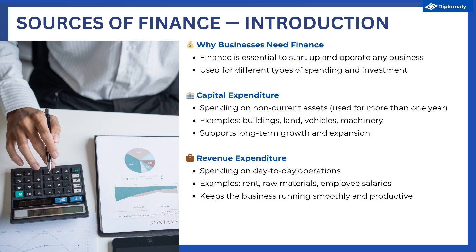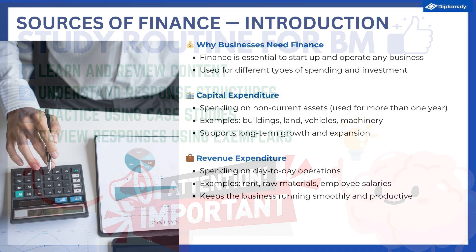We'll learn more about non-current assets in Unit 3.4 when you look at the various final accounts. The other type of spending is revenue expenditure, which refers to the spending on the day-to-day running of the business. This includes things like rent, paying suppliers for raw materials, and paying employees' salaries and wages. These revenue expenditures are critical to keep the business running on a day-to-day basis.